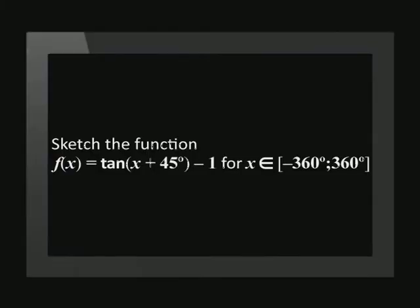Let's try an example together. Our first example asks us to sketch the function f(x) = tan(x + 45°) - 1 for x between -360° and 360°.